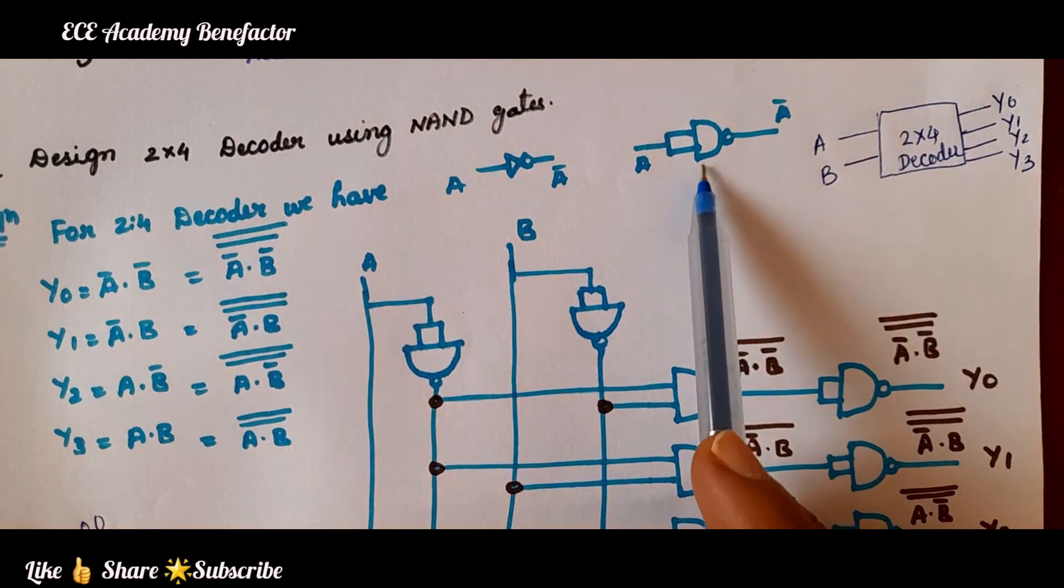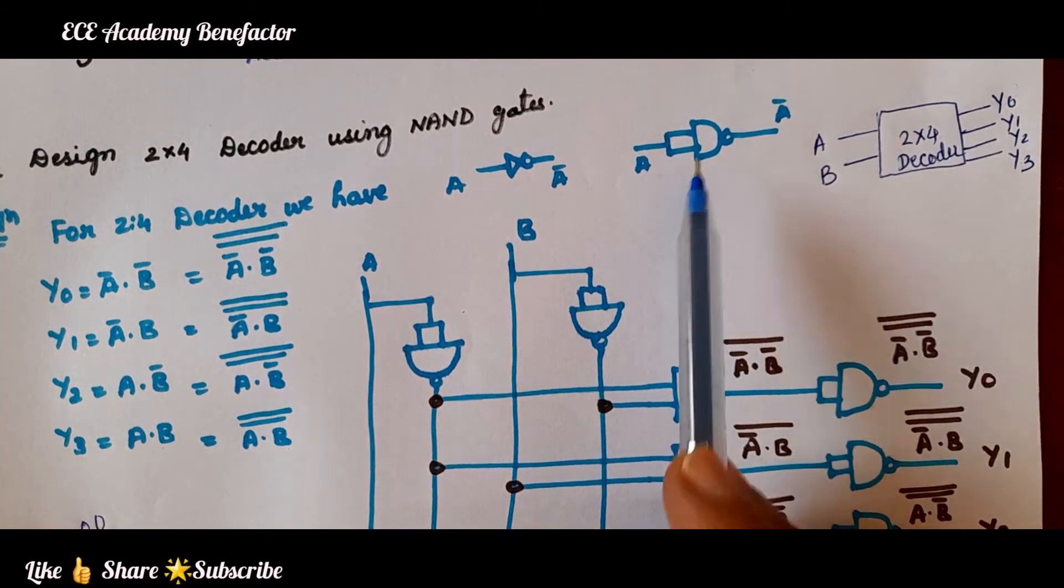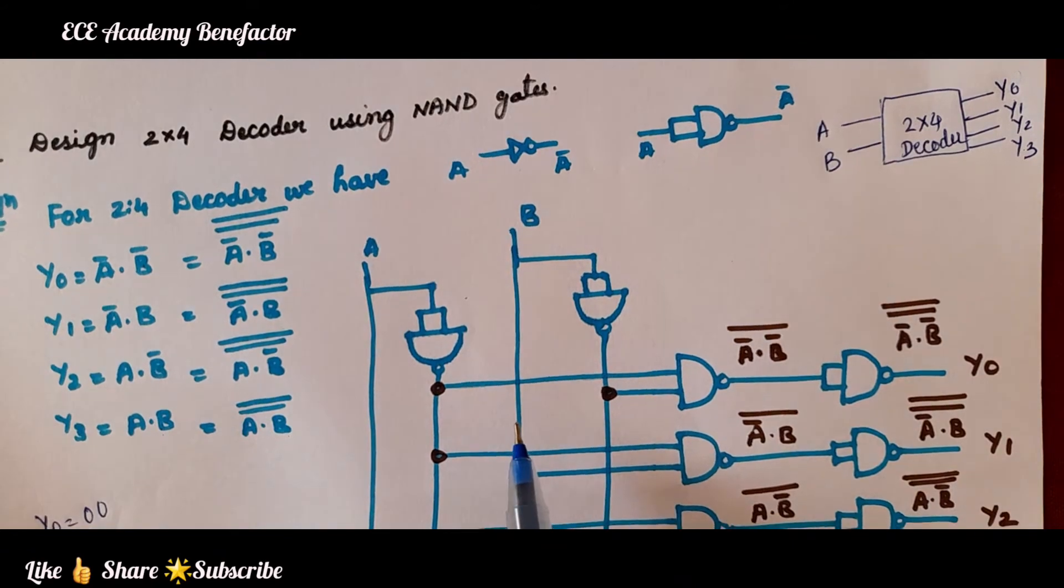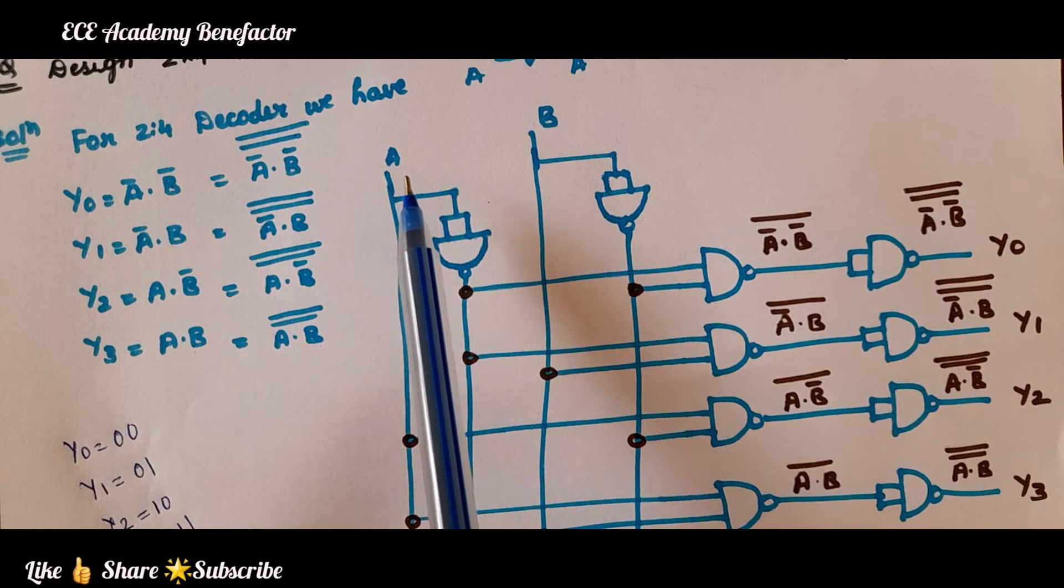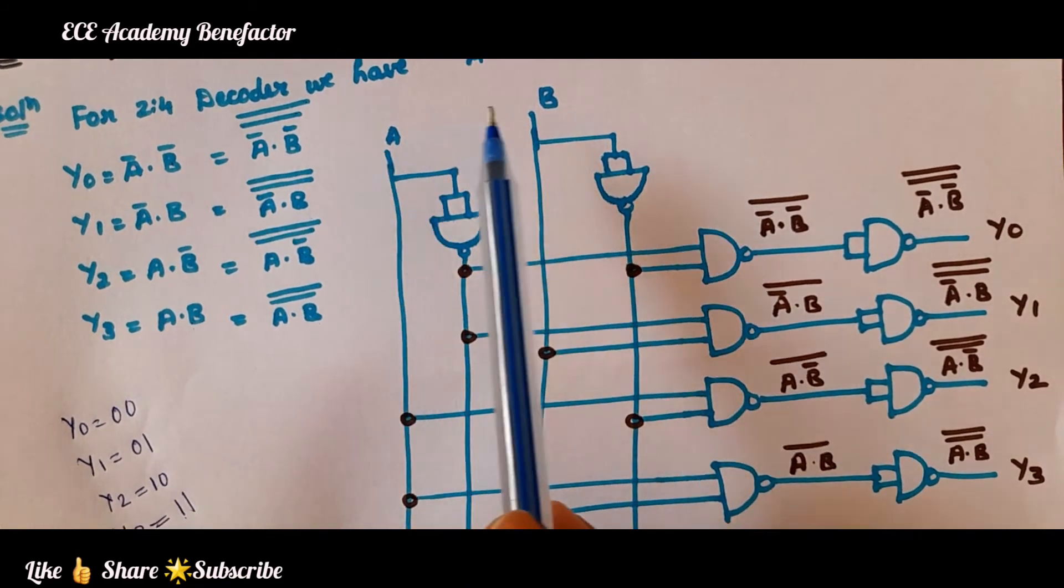We will be using this symbol as NAND gate because we are realizing it using NAND gates. Let us first see what are the input lines? Input lines are A, B.